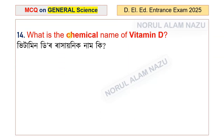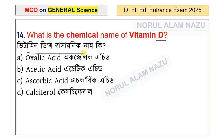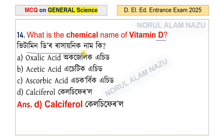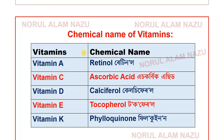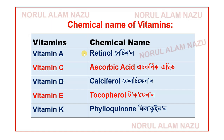What is the chemical name of vitamin D? The options are oxalic acid, acetic acid, ascorbic acid, and calciferol. The answer is option D: calciferol. Calciferol is the chemical name of vitamin D.